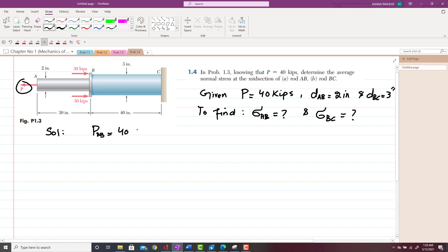So load of PAB is 40 kips. And area of AB, which is equal to π/4 × DAB², which is π/4 × 2², which will give you 3.1416 in². So now you have to find the stress in the midsection. And this PAB is 40 kips, so this AB is in tensile stress.